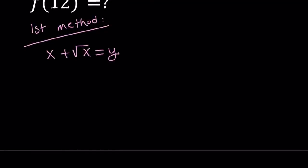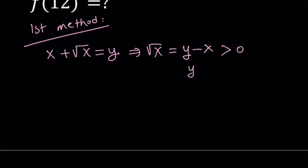From here we get the following for √x, which is important because we want this to be well defined. √x can be written as y − x from here. Since √x is defined only for positive values, √x is going to be greater than 0. Therefore y − x needs to be greater than 0, and this implies that y is greater than x.